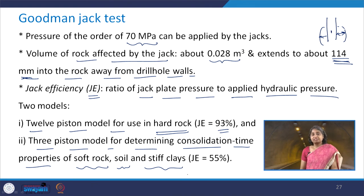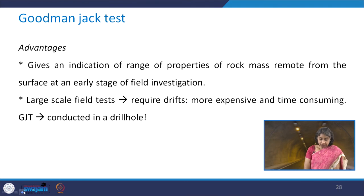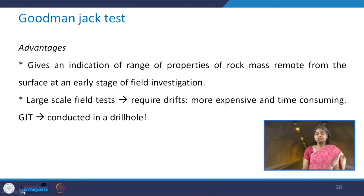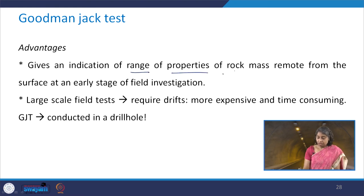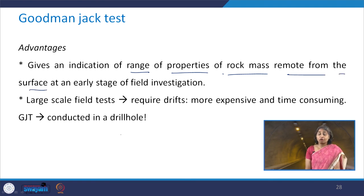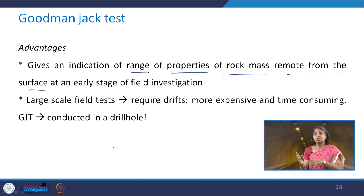The 3-piston model has a jack efficiency of 55%. The advantage of the Goodman Jack test is that it gives an indication of the range of properties of the rock mass remote from the surface at an early stage of field investigation because it is conducted in a borehole, making it possible to reach remote locations from the surface.